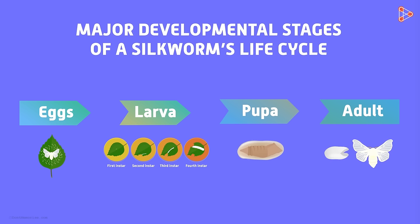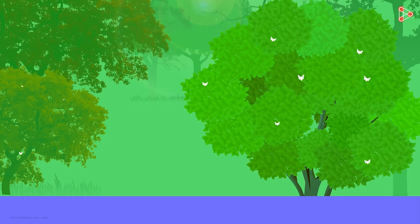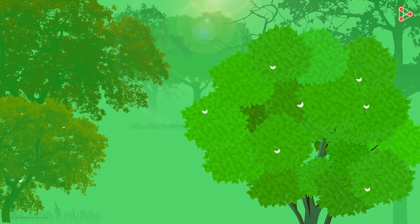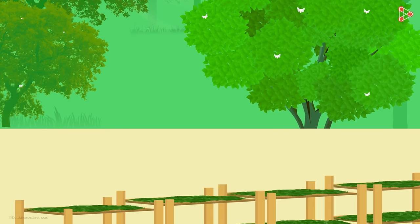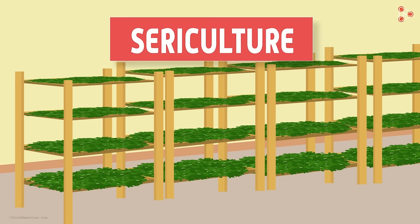But how and where do we get these cocoons from? Do we have to go to the forests where the mulberry trees are? The silkworms are reared in special farms. Rearing of these silkworms is a profitable industry by itself. The practice of culturing silkworms is called sericulture. Next, we will see this beautiful practice of sericulture and understand how silk fibres are obtained from the cocoons.